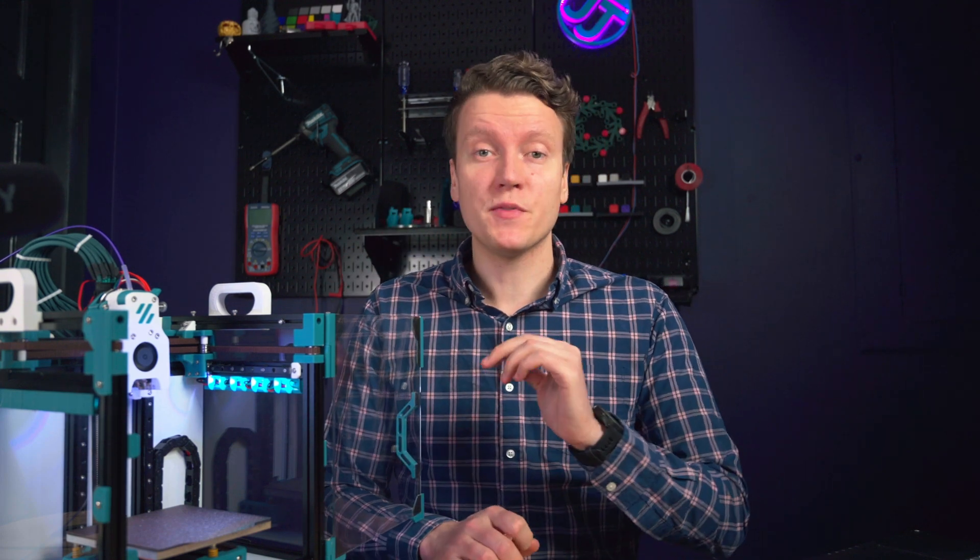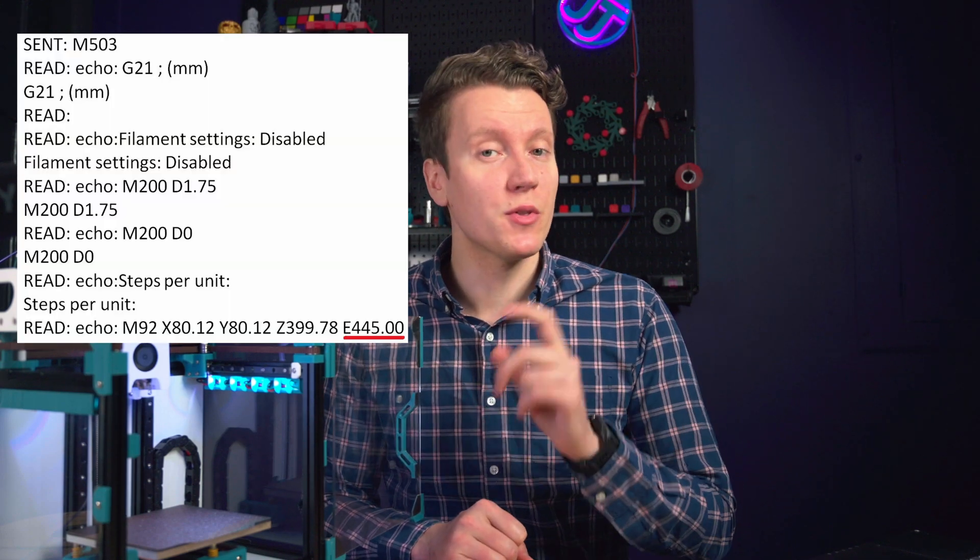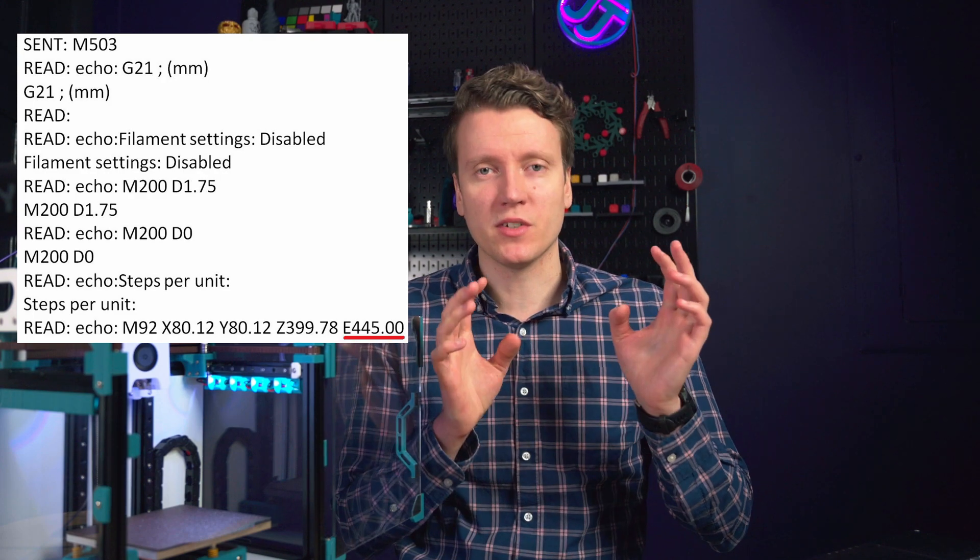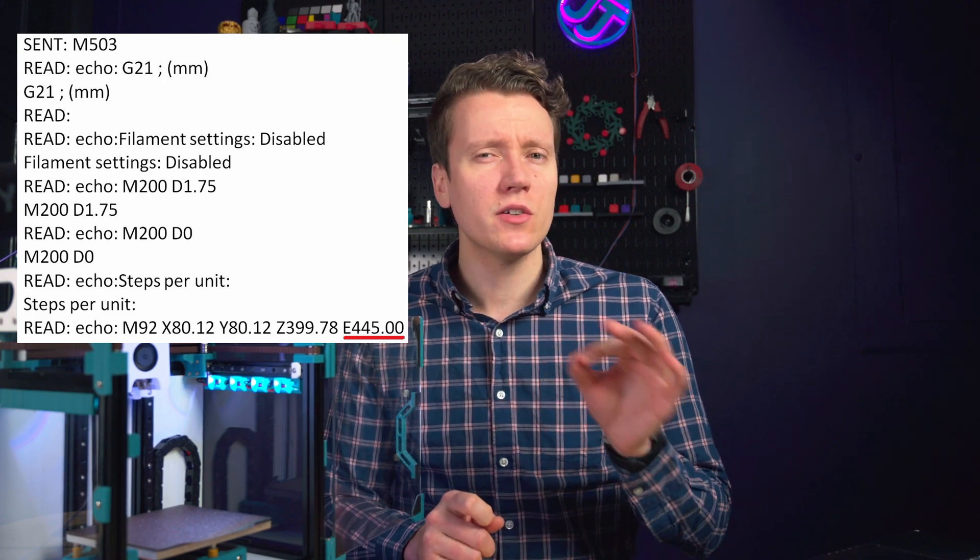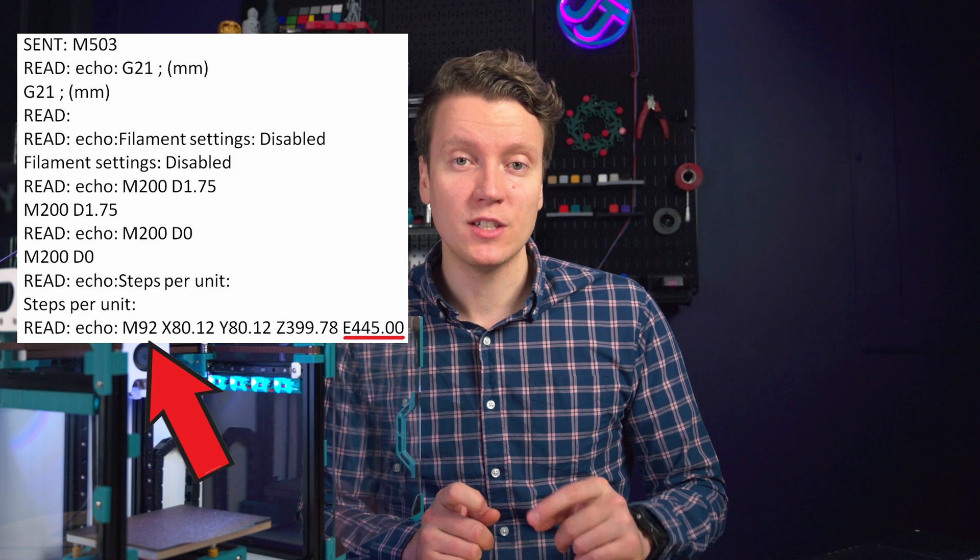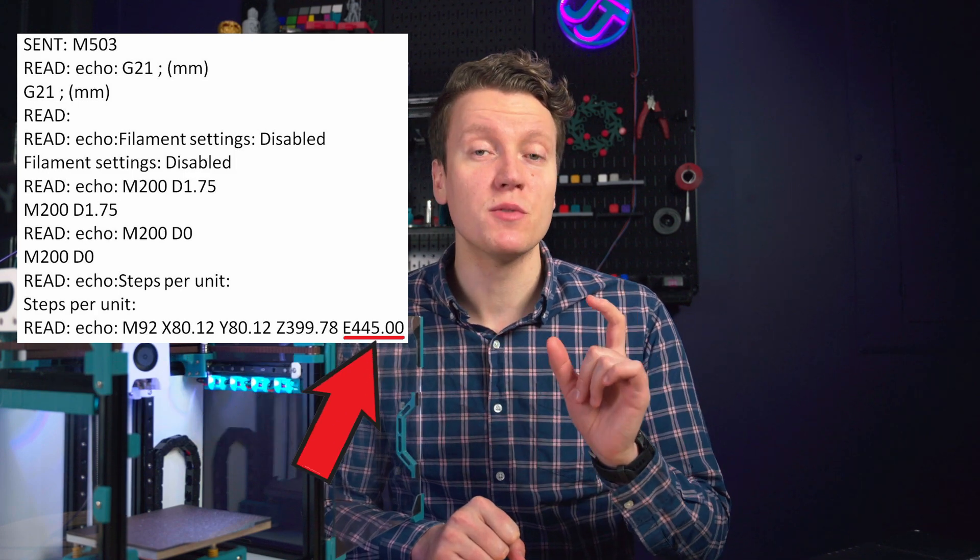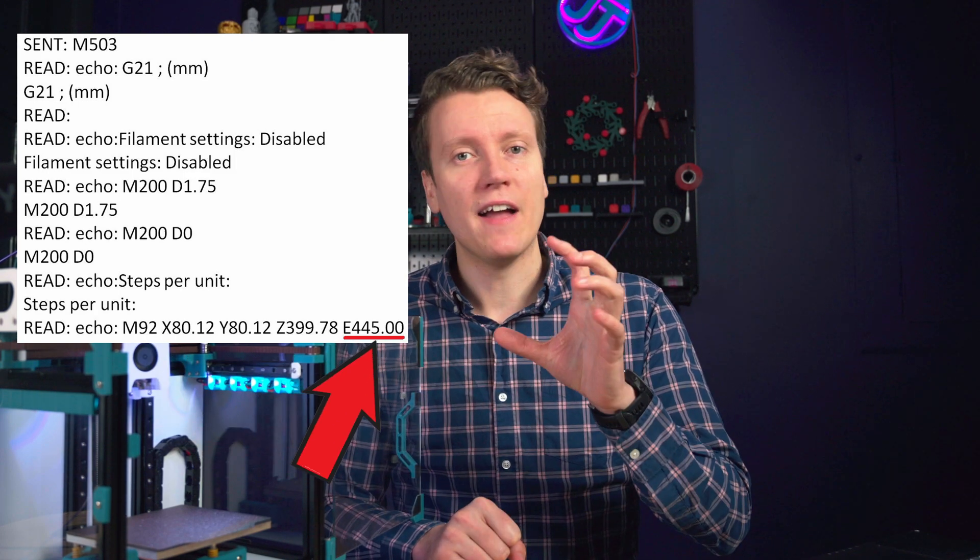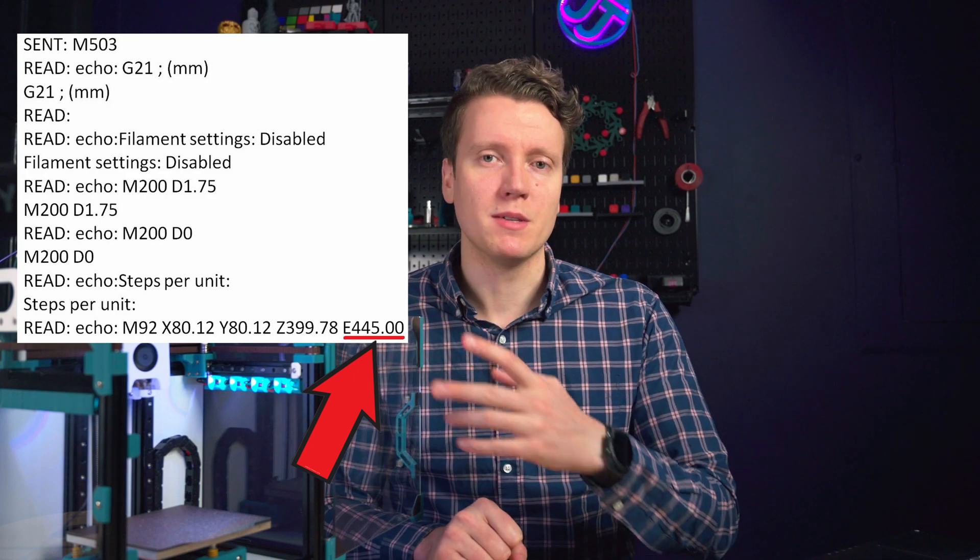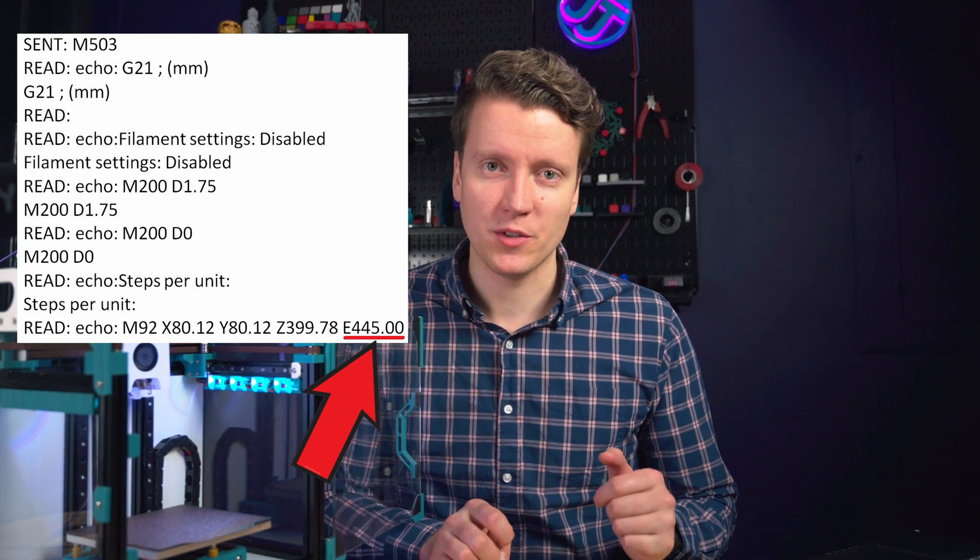So to do our calibration, we need to figure out what the current extruder value is on our printer. If you're using Marlin firmware, you can send the command M503. That will give you a printout of a bunch of different config settings. Then look for the line that starts with M92. Somewhere at the end of that line should be a value that starts with an E and then be a three-digit number with maybe some decimals after it. That's your current extruder value.